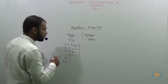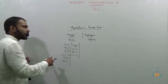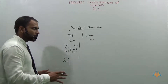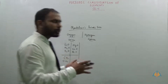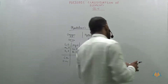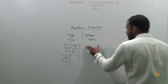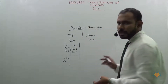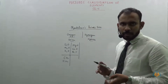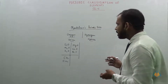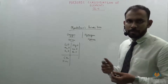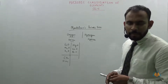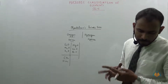What he did was that he placed elements that form the same kind of oxides in one group. Similarly, elements which form the same kind of hydrides were placed in one group, and then he formed his own periodic table — which you have in your PDF file.